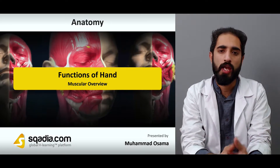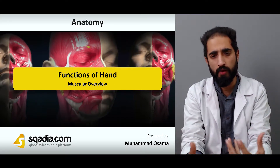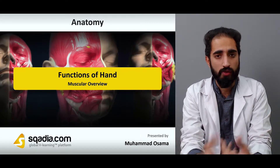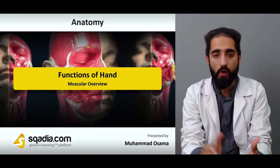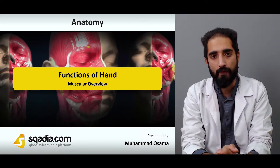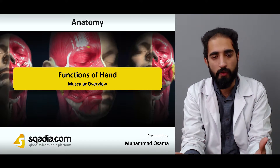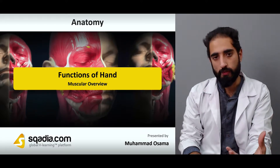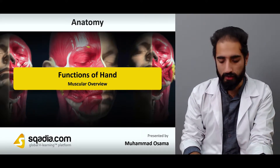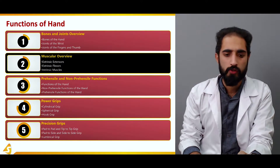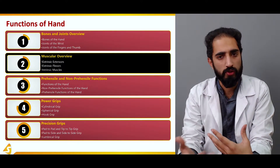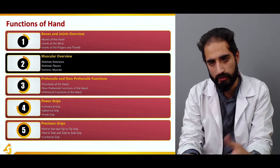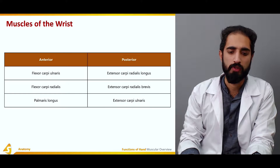In order to understand the functions of the hand, it is very important to have some information regarding the muscles and their actions which are present or acting at the level of the wrist and hand. We're going to take a look at the muscular structures present in the hand, covering both extrinsic muscles — extensors and flexors — as well as the intrinsic muscles of the wrist and hand.